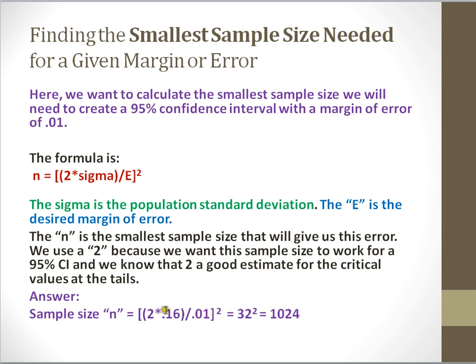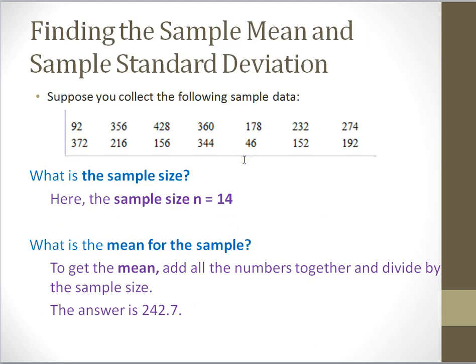So that's an example of how to find the smallest sample size needed for a particular margin of error. And remember that the problem also gave us the standard deviation. Let's see another example. In this example, we want to find the sample mean and the sample standard deviation given a data set. So this is a little bit different because so far we've been given this information, but in this case we're just given a set of data, and we're looking to find the sample mean and the sample standard deviation.